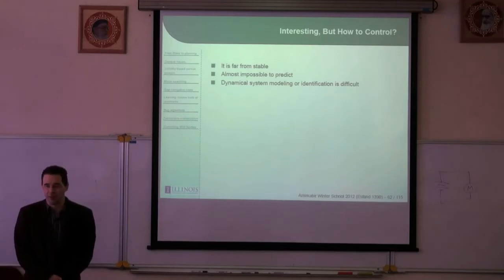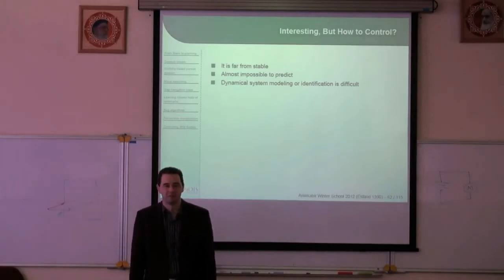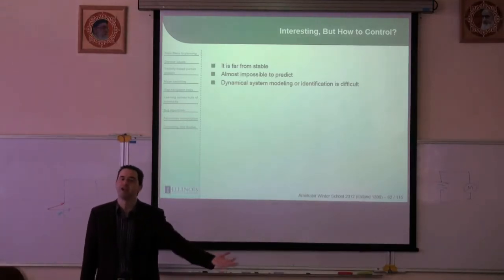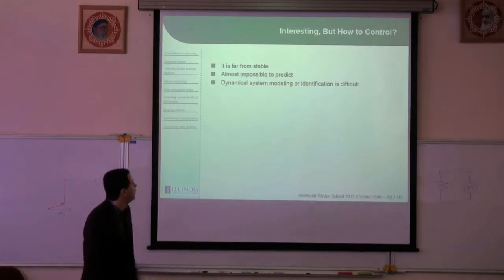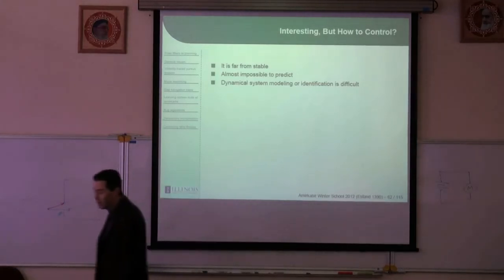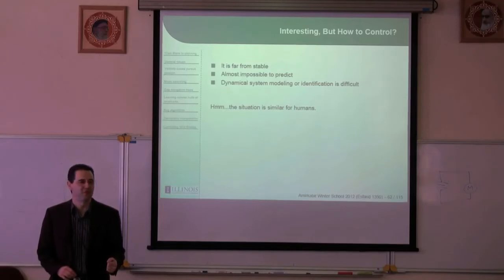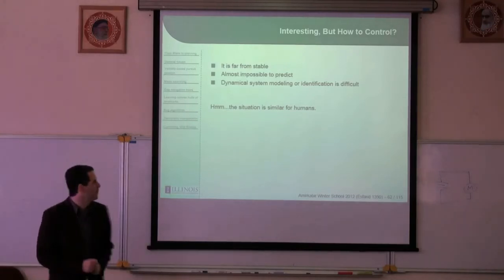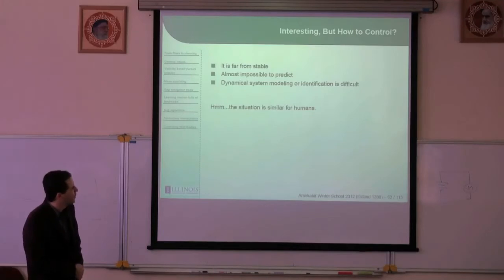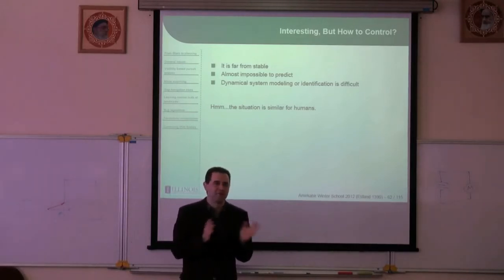That system is far from stable. Usually people in control systems care about stability; if the system's not stable, they work very hard to stabilize it. It's also almost impossible to predict — you can try to repeat the same experiment over and over, but it's going to do something very different every time. It makes dynamical system modeling and system identification very difficult. Well, people are kind of similar, right? Humans. They are far from stable, almost impossible to predict, and it's hard to model them carefully.